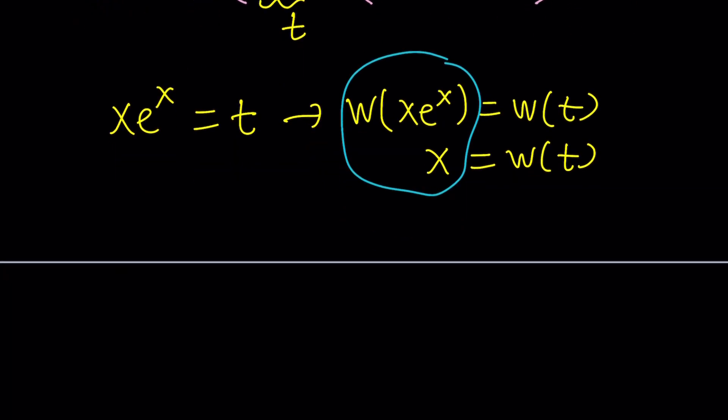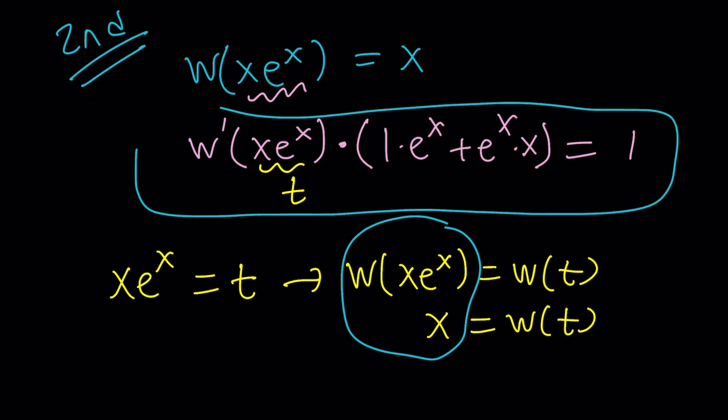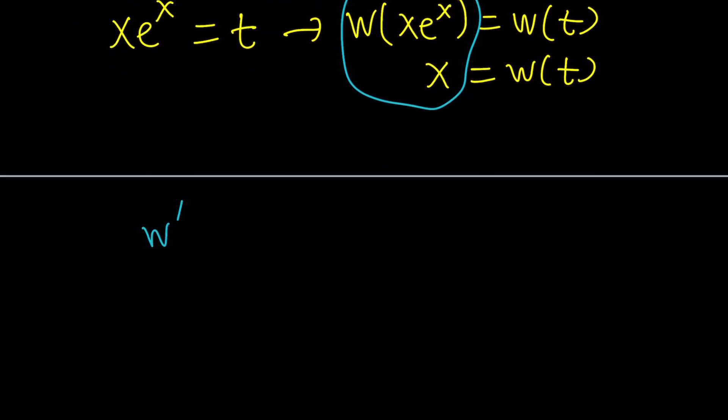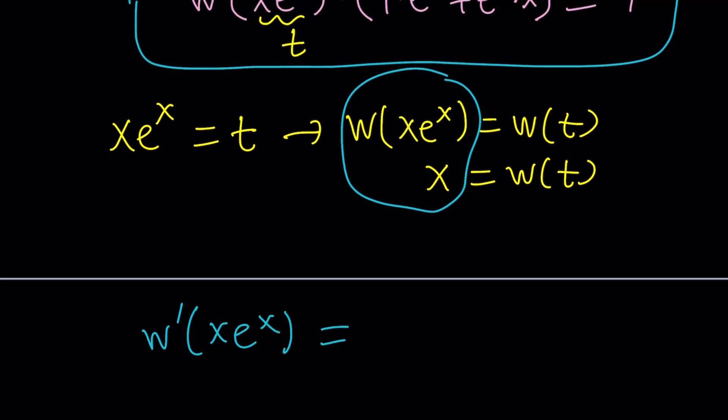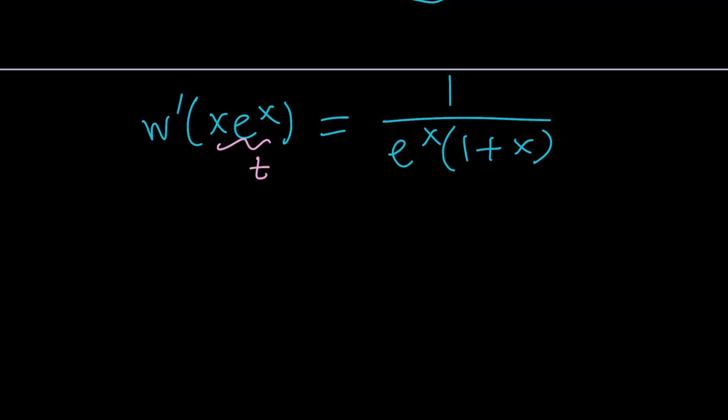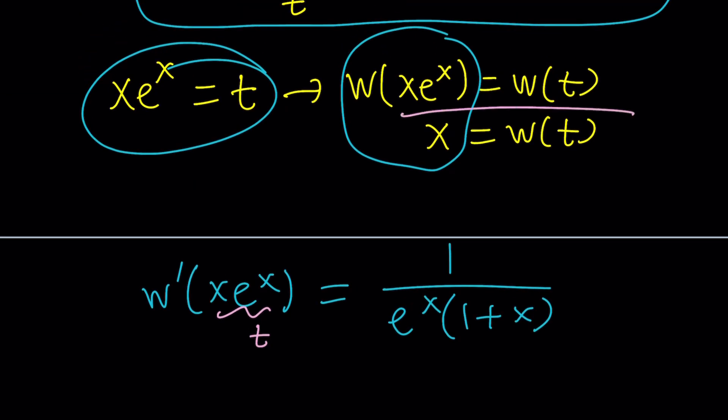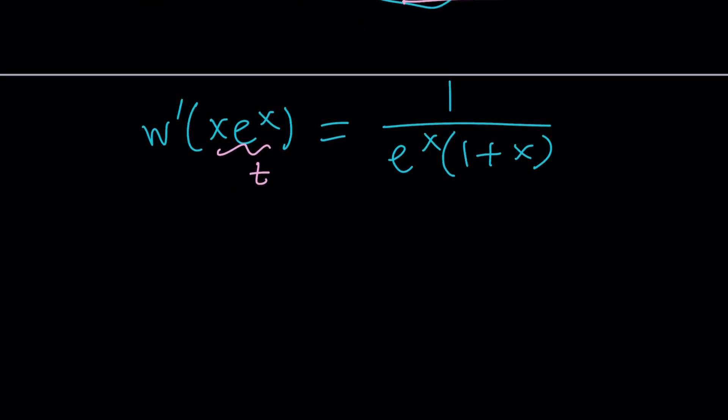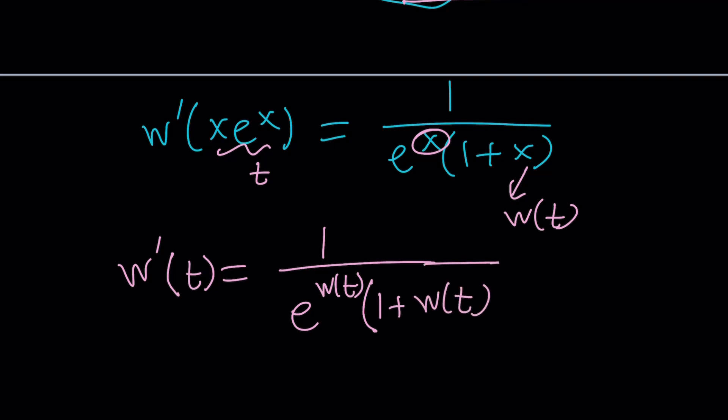So now we got the following. First of all, we have this expression right here. We're going to go ahead and isolate it. Let me write W prime x e to the x equals 1 over, now I'm going to factor out an e to the x here. That's going to give me 1 plus x. So here's what I need to do. We call this t. So this is going to be a t here. And e to the x, what is e to the x? What is x? x is going to be W of t. Make sense? So I'm going to replace x with W of t. And of course, the same here. So W prime of t is going to be 1 over e to the W(t) multiplied by 1 plus W of t.